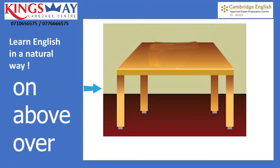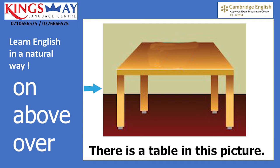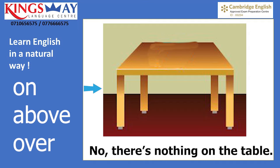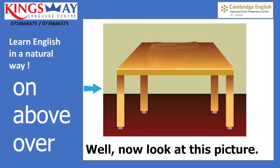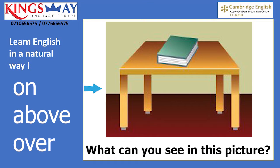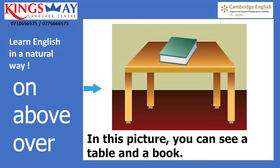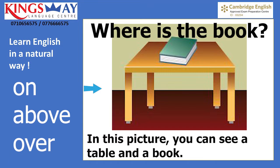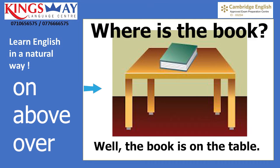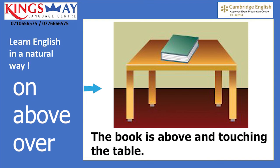Now look at this picture. What can you see? There is a table in this picture. Is there anything on the table? No, there is nothing on the table. Now look at this next picture. What can you see? In this picture you can see a table and a book. Where is the book? The book is on the table. Or you can say: there is a book on the table.